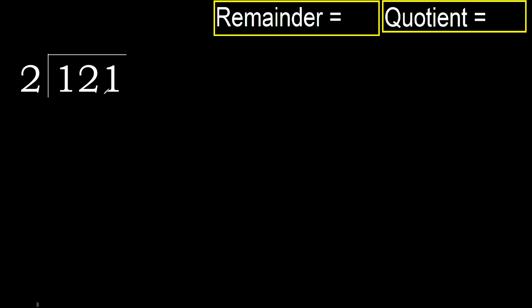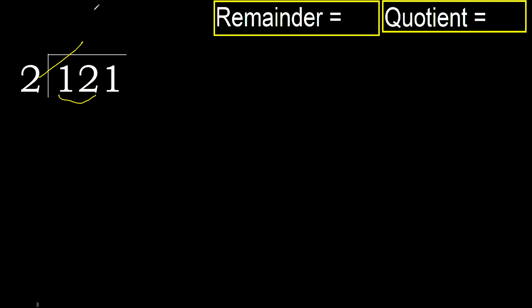121 divided by 2. 1 is less, therefore next. 12 is not less, therefore with 12 — 2 multiplied by which number is nearest to 12?